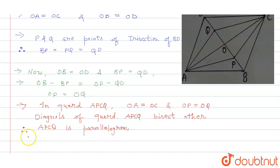And therefore, we can say that AP is parallel to CQ because they are the opposite sides of a parallelogram. Hence, proved. Thank you.